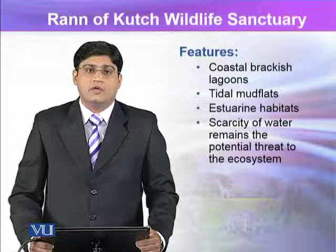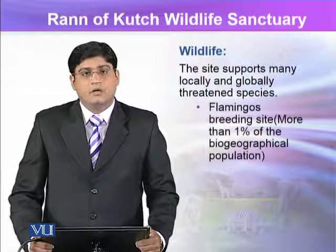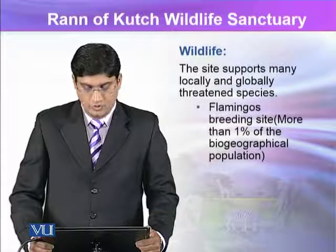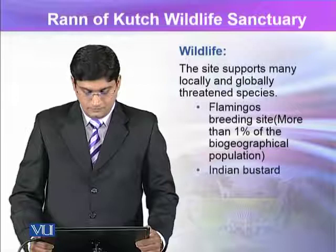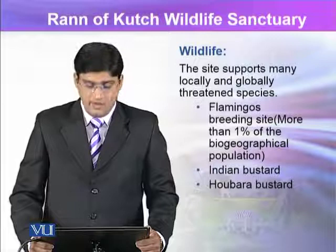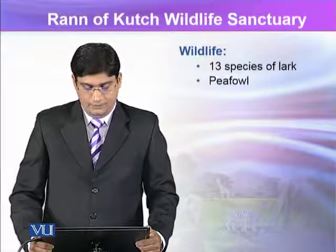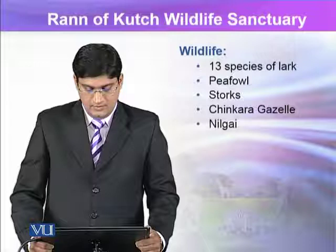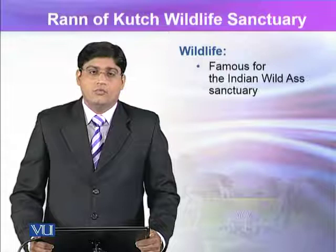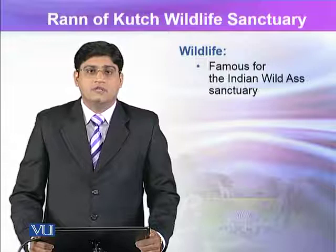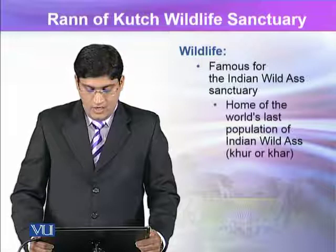Animals and organisms — whether mammalian, reptilian, or birds — must manage their habitat according to this salt environment. The wildlife here includes flamingos, which are very common — an estimate that 1% of the biogeographical population exists in this sanctuary. It includes Indian Bustard, Houbara Bustard, Saras Crane, hyenas, 13 species of larks, lapwings, storks, Chinkara gazelles, Nilgai, pangolins, desert wolf, and desert cat. This wildlife sanctuary is particularly famous as a home for the Indian wild ass — locally called 'Khuriya Khor' — and it is the home of the world's last population of Indian wild ass.